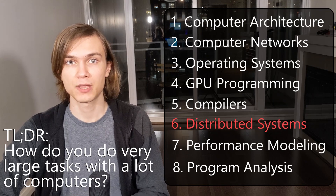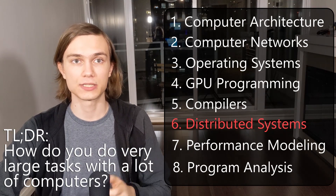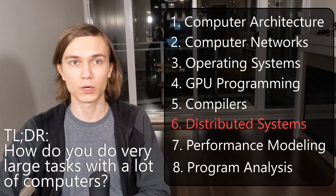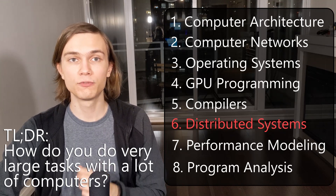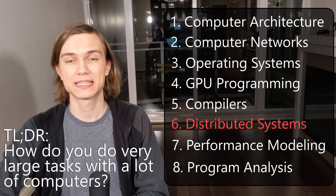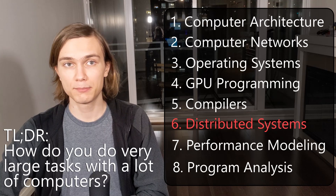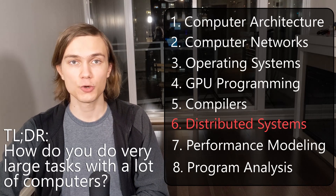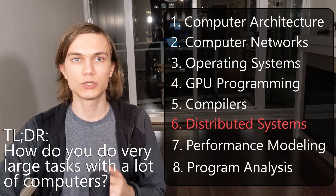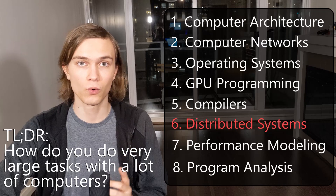Parallel and distributed systems. This course basically combines everything you learned about concurrency from operating systems and a lot of things from computer networks into a beautiful systems soup. This course will generally talk about message passing, concurrency at scale, the trade-off between computation and communication, and might touch more on modern distributed systems. This course is usually taught either as systems theory or as a very applied, hands-on course.